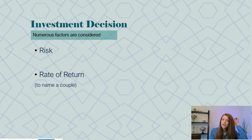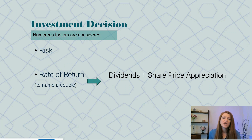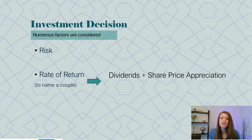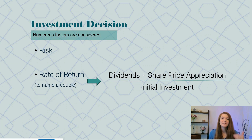One of the big things we're going to look at as an investor is the rate of return. The formula looks like this: dividends or any kind of income from the company, plus the share price appreciation, divided by the initial investment. For example, if I paid $10 for a share of stock and sold it for $12, that's a $2 share price appreciation. We'd take that $2 plus maybe 50 cents in dividends, giving us $2.50 as the numerator. The denominator is our initial investment of $10. So it would be $2.50 divided by $10.